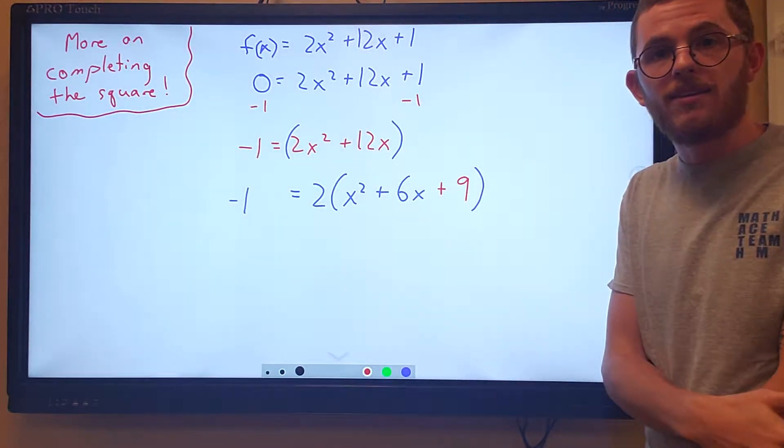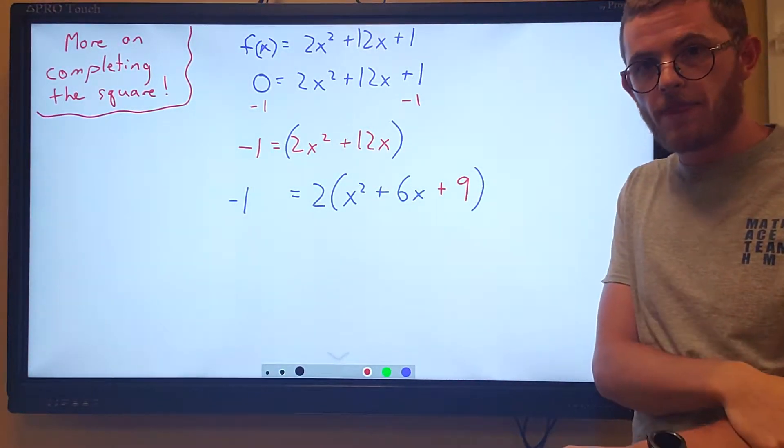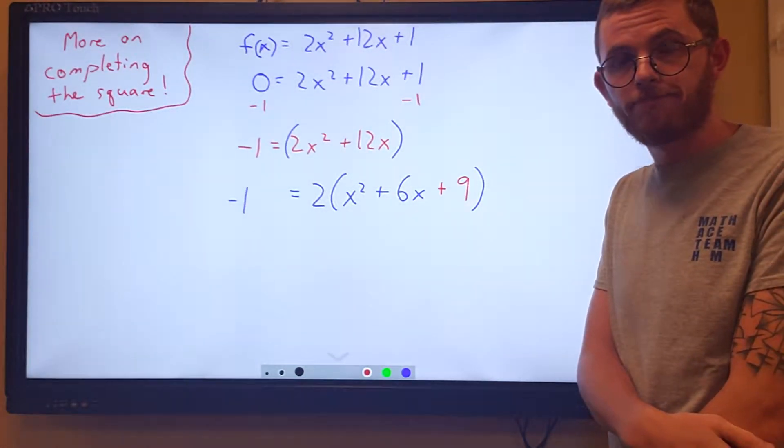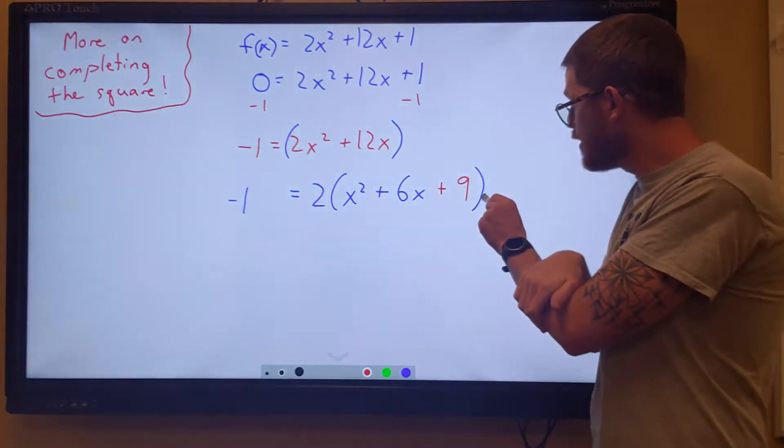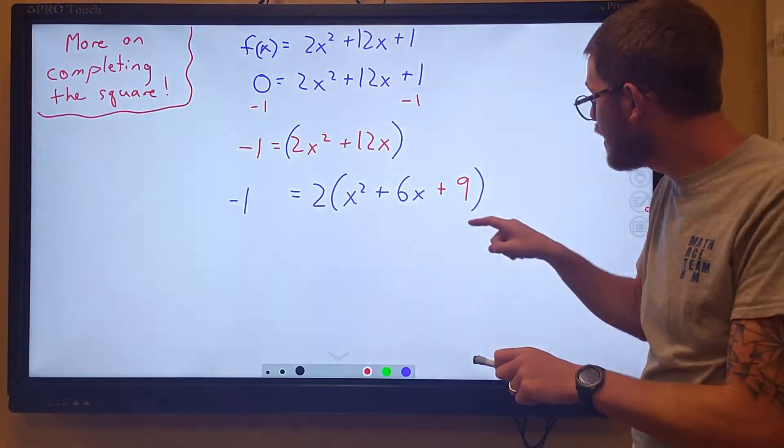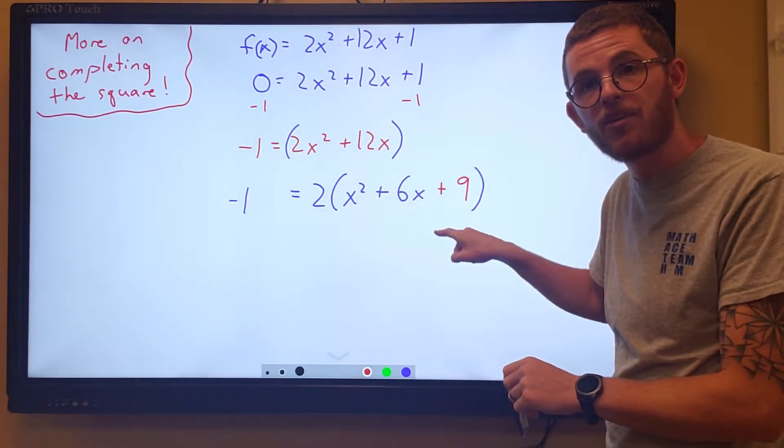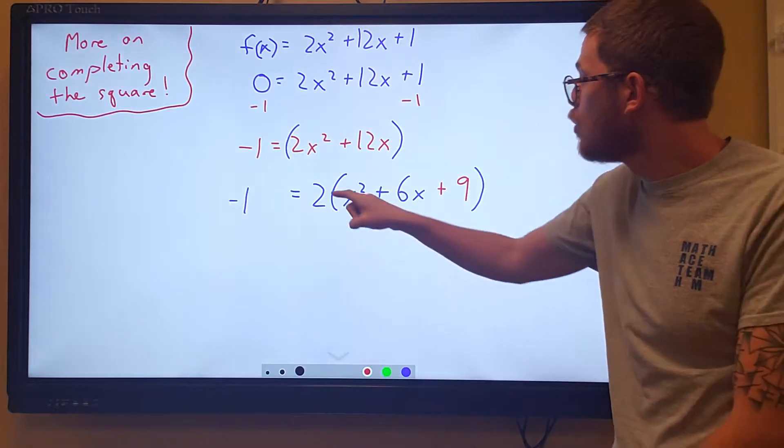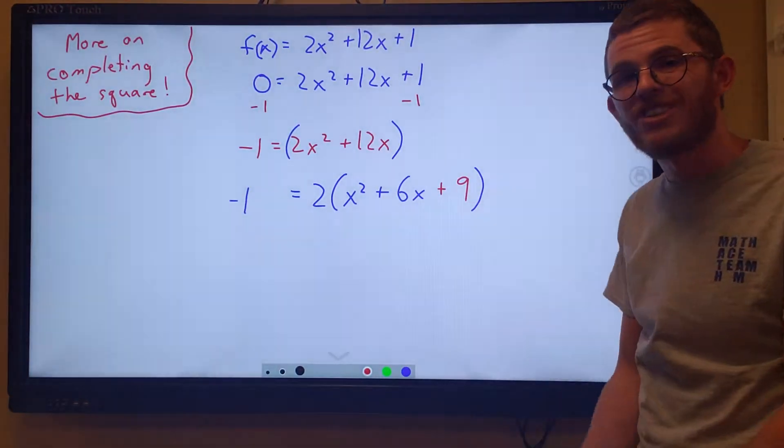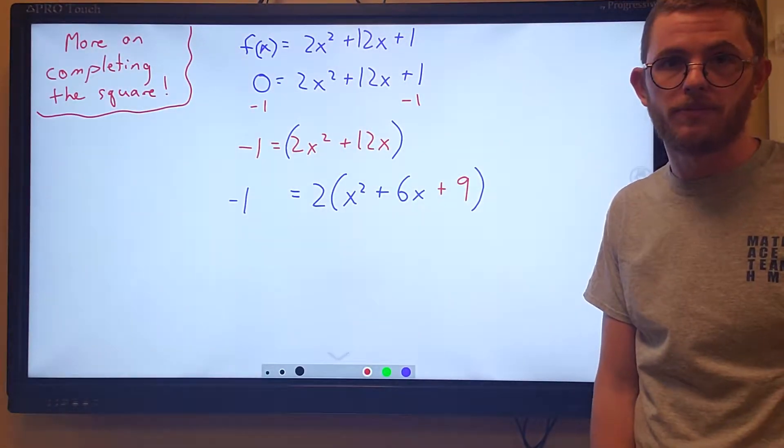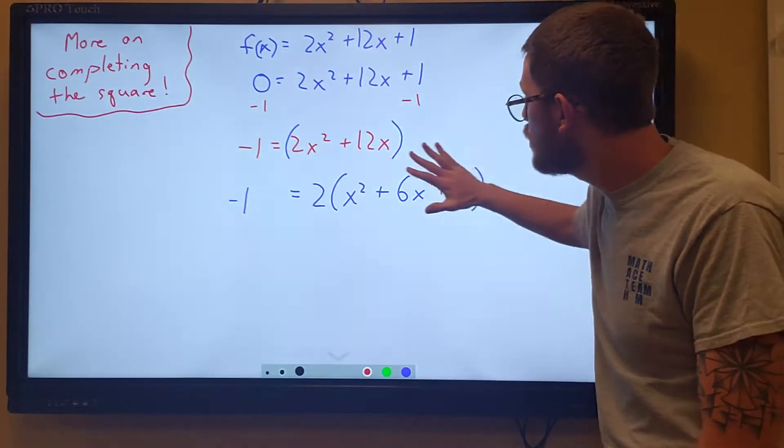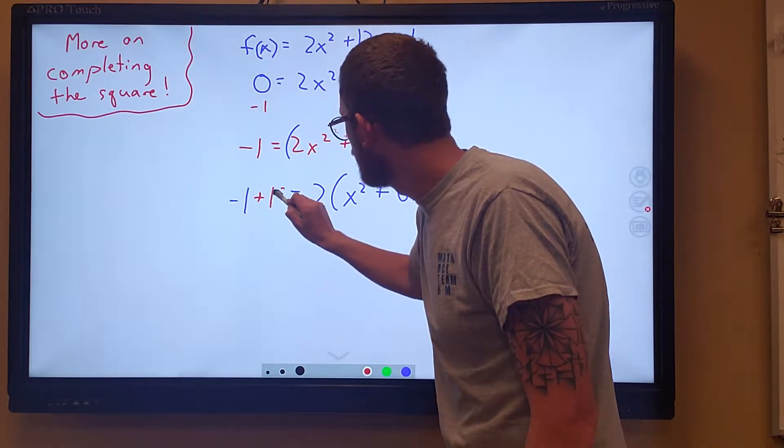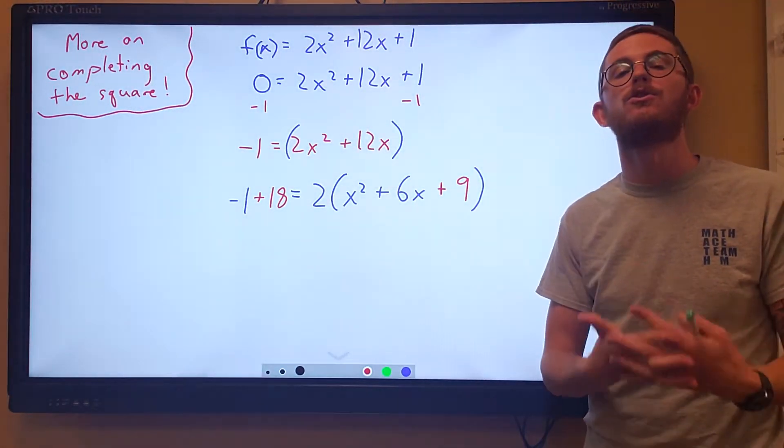What did we just add to this side? Think about it. We did not just add 9. When we put a 9 right there, that's on the inside of this set of parentheses with a 2 on the outside. We really just added 18 to the right side. Whatever we put on one side of the equation, we have to add to the other side. It's huge.